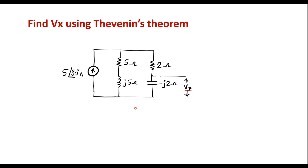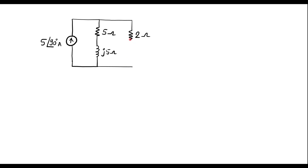In Thevenin's theorem, for the branch in which we are calculating the voltage or current, we are supposed to remove that branch from the circuit. So now, let me remove this -J2 ohm from this circuit. The circuit now looks like this — the -J2 ohm has been removed and this terminal is now open. We are supposed to find the voltage between these two terminals.